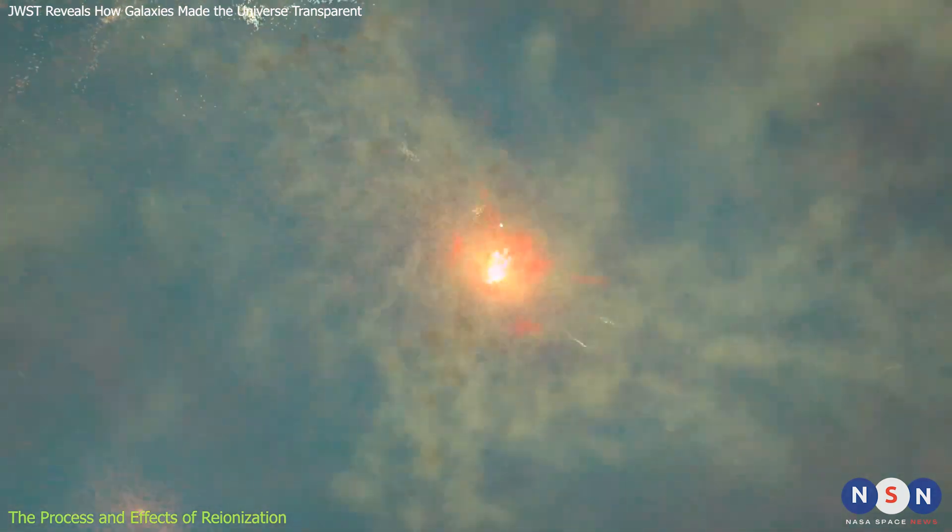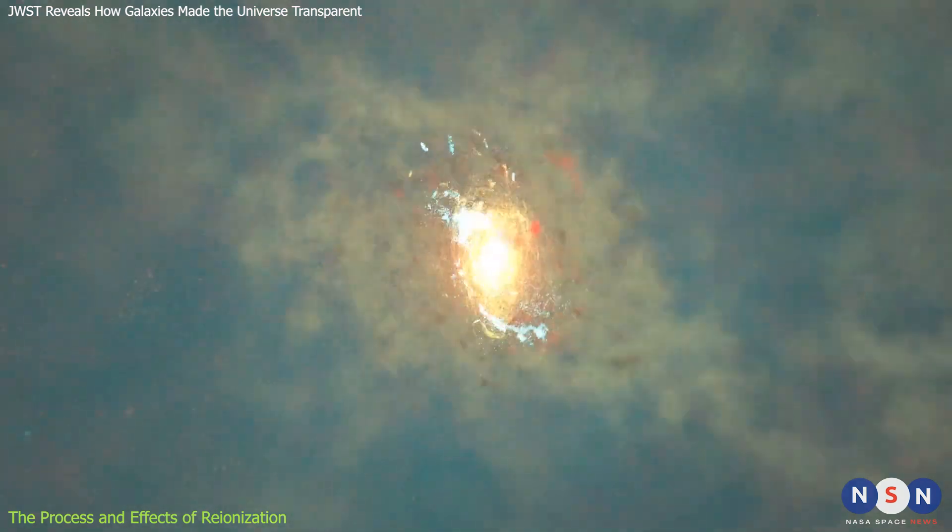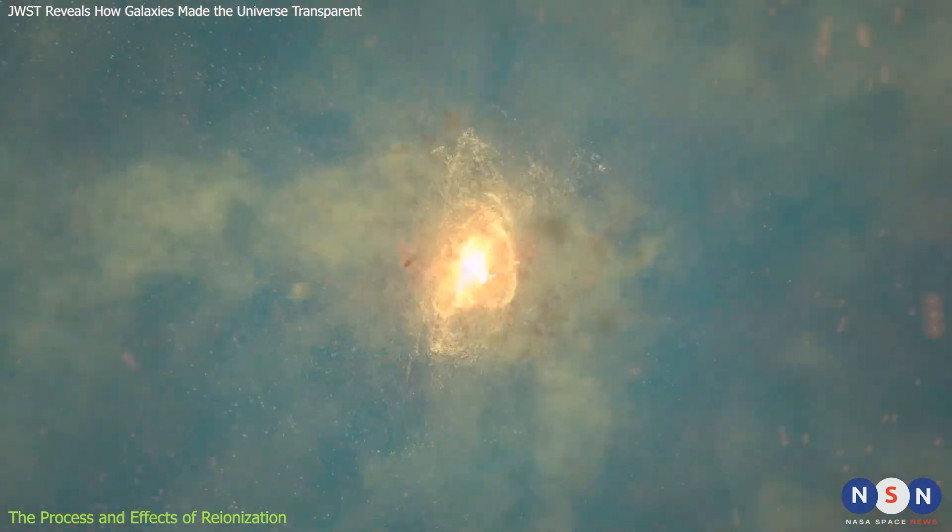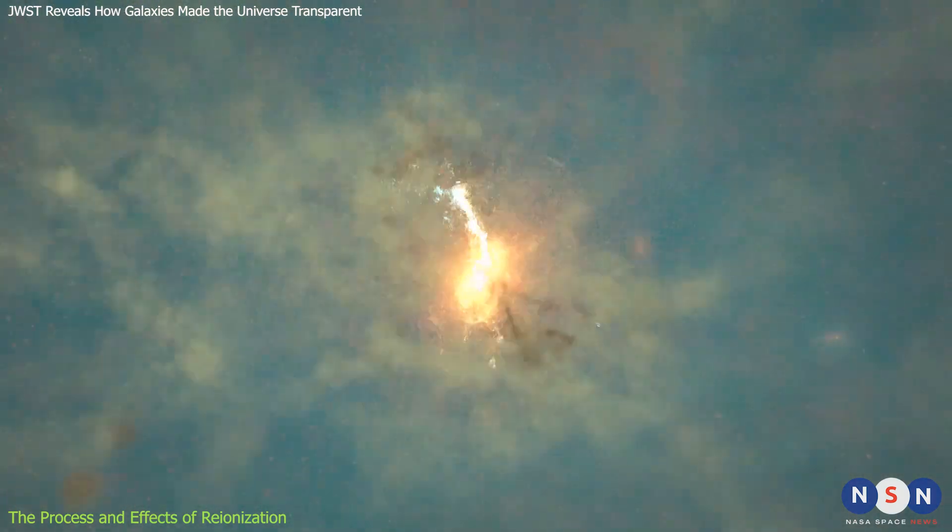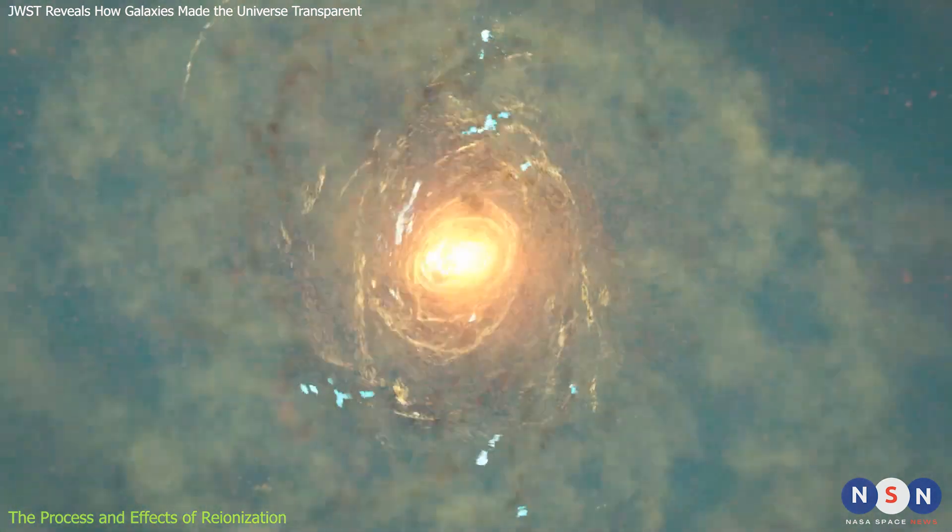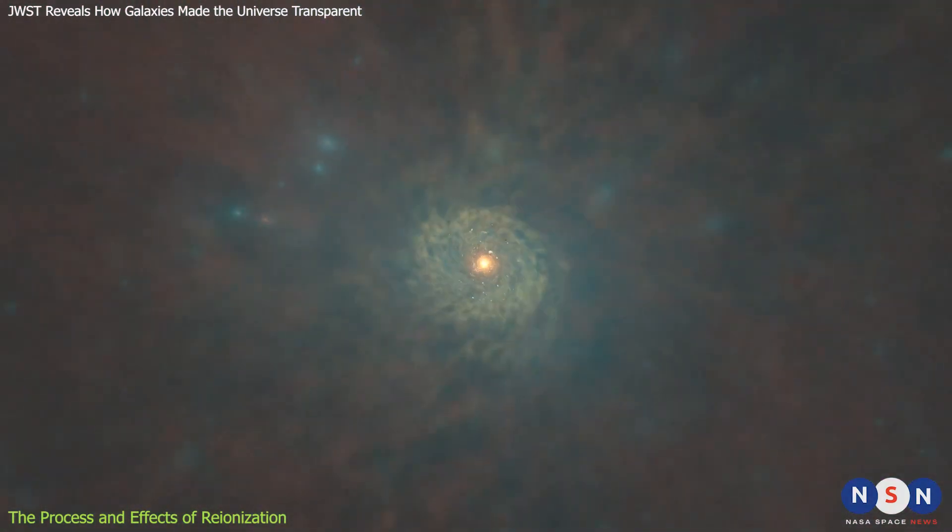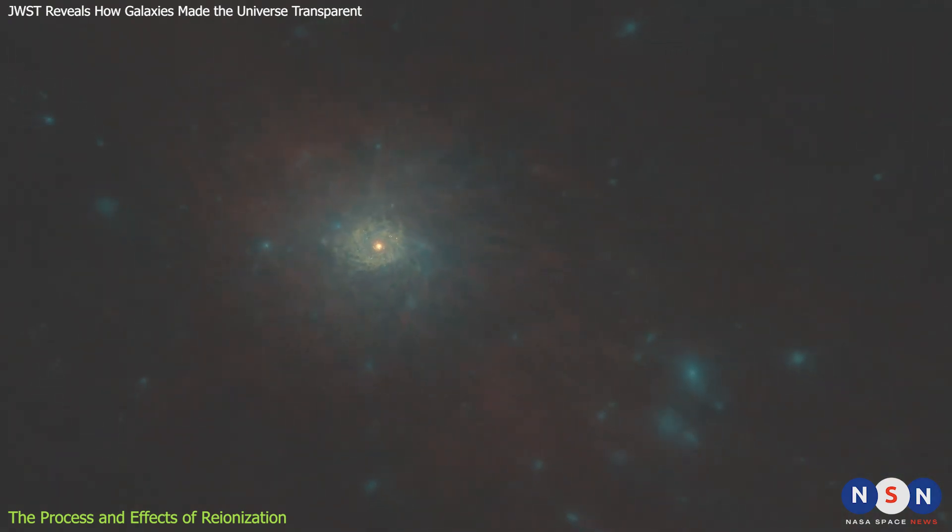However, as more and more galaxies formed and emitted more and more ionizing photons, they gradually created bubbles of ionized gas around them. These bubbles grew larger and larger over time, eventually overlapping and merging with each other. This made the intergalactic medium more transparent to ionizing photons, allowing them to travel longer distances across space.